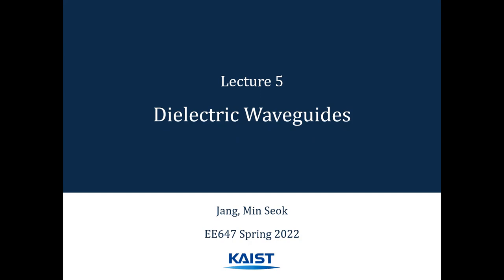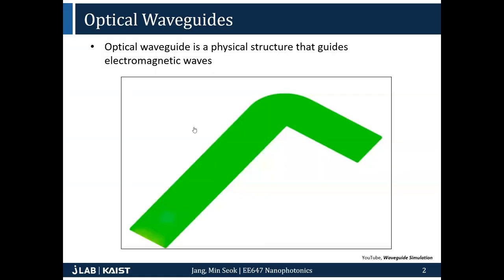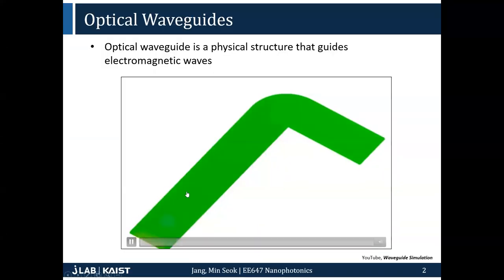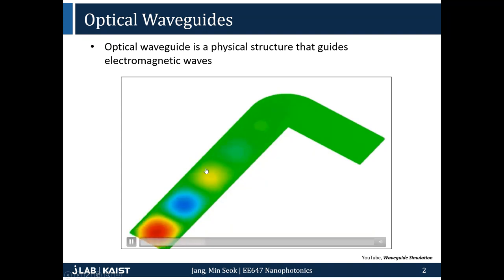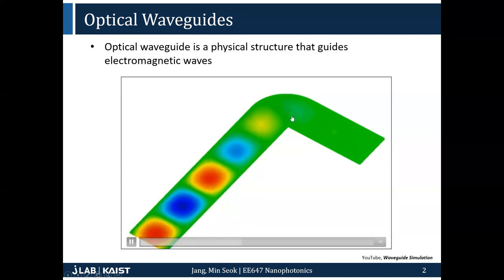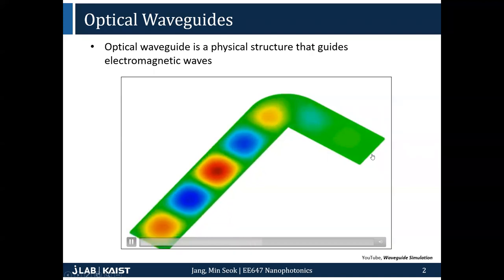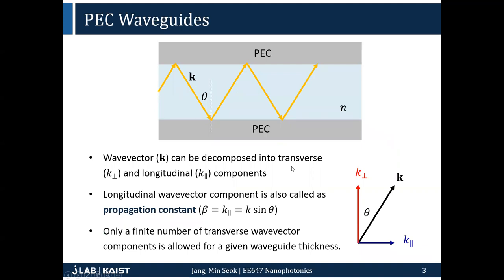Let me briefly recap what we learned last time. We started to learn about dielectric waveguide. A waveguide is a structure that allows a wave to propagate along it. You can see the electromagnetic wave propagating along this green waveguide. We started looking at the simplest form of optical waveguide, which is a PEC — perfect electric conductor — waveguide.